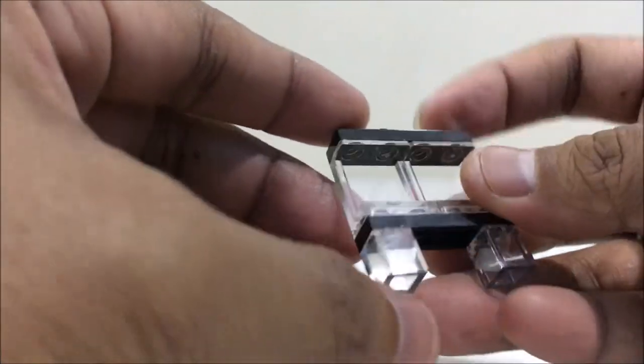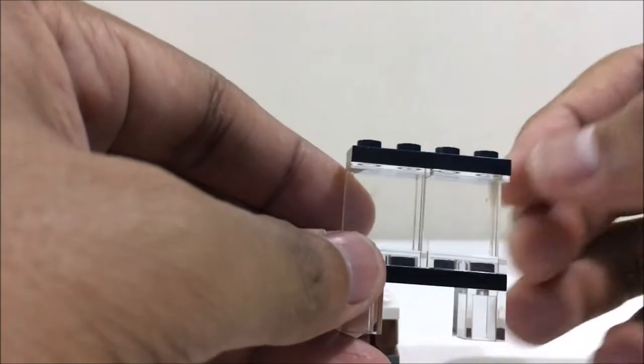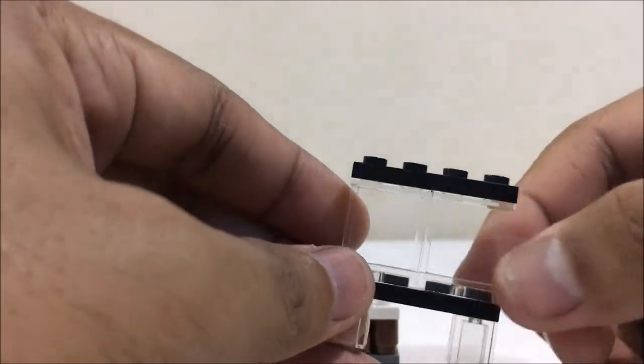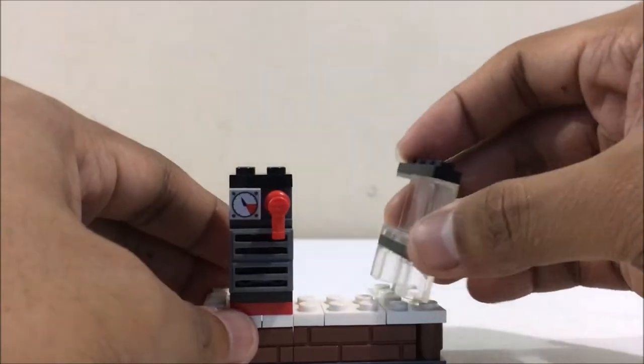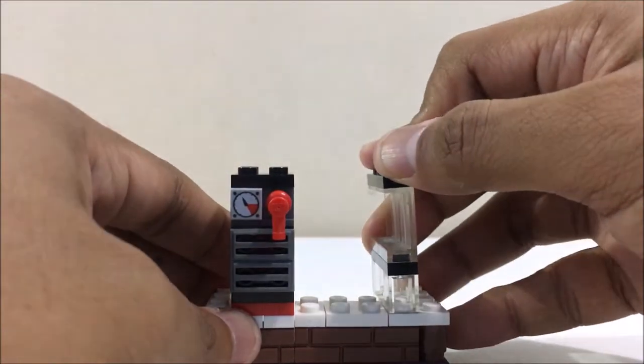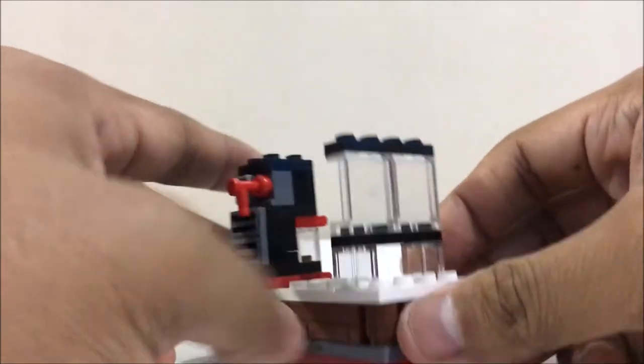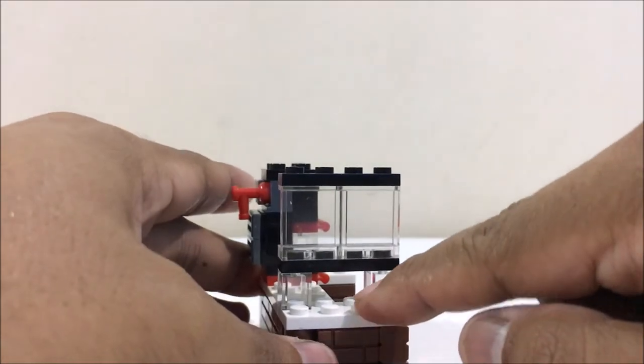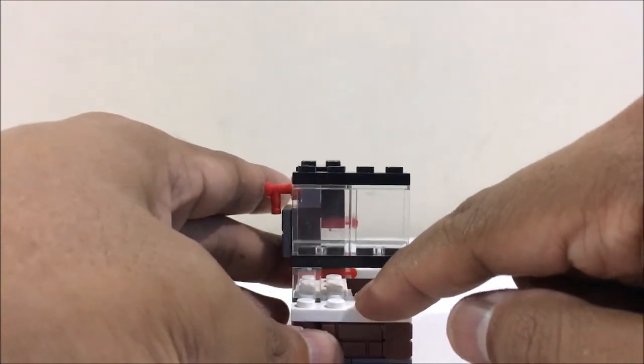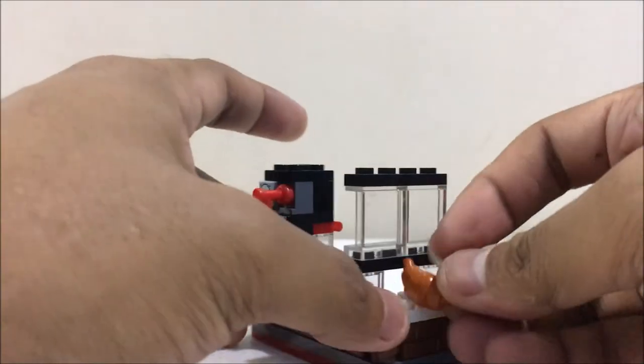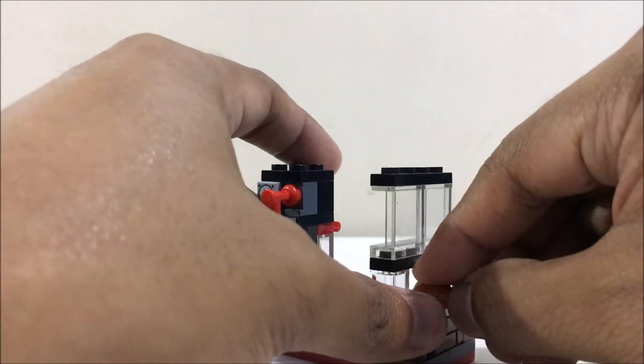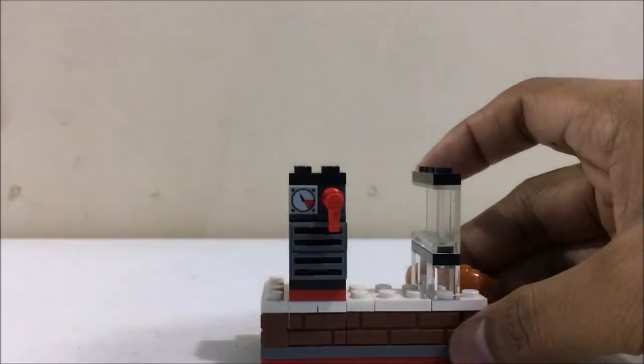So this is a simple glass build made up of transparent pieces and two 1x4 plates. Just put this here. You can put the croissants here and here.